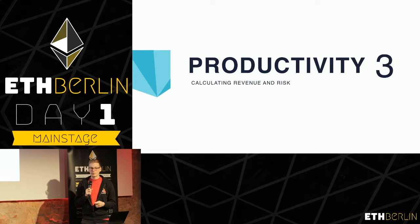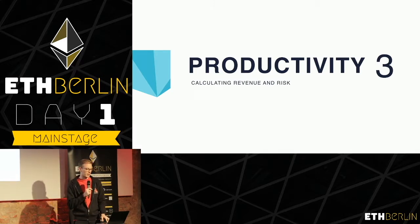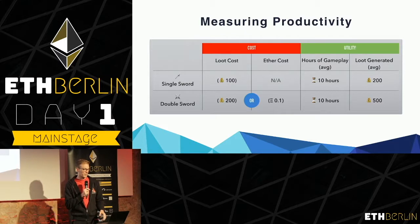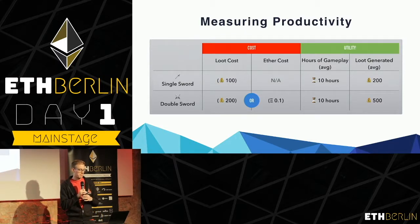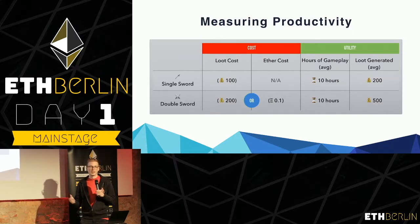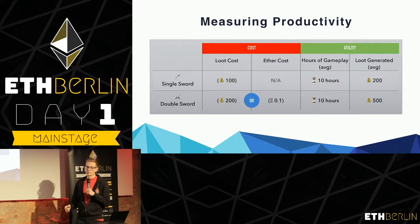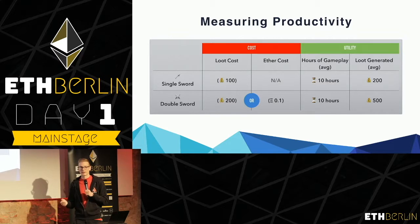The first opportunity we have with NFTs is to use them to become productive — where we can calculate a cash flow, maybe revenue, and also calculate the risk involved in holding an NFT. In the video game world, we can measure the productivity of items. In this scenario, we have two different swords: a single sword that can be purchased for 100 loot and generates about 200 loot over the course of 10 hours on average for the average game player, and a double sword that costs 200 loot.